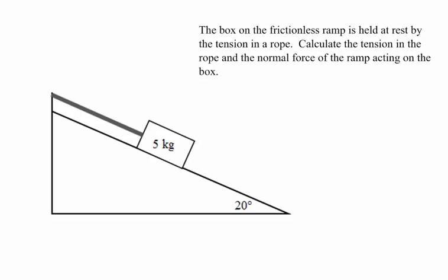In this problem, we're going to look at a box that's being held at rest on a frictionless incline. There's a rope pulling parallel to the ramp that's keeping the box from sliding down. We're going to calculate the tension in the rope needed to keep the box from sliding down, as well as the normal force of the ramp pushing on the box.